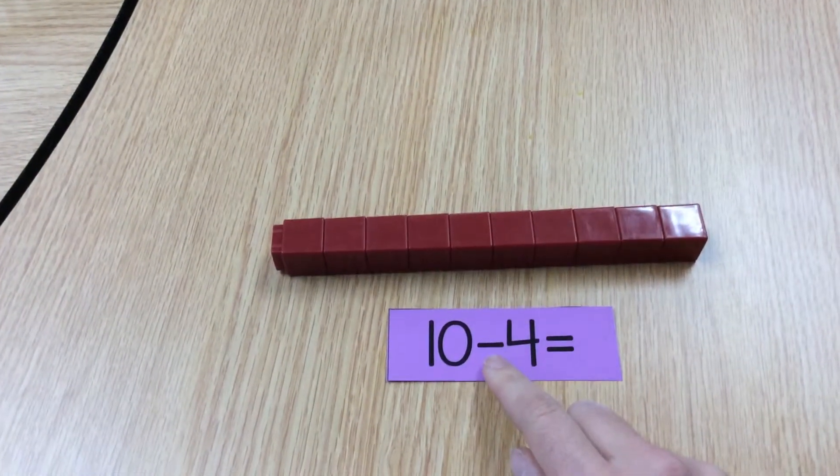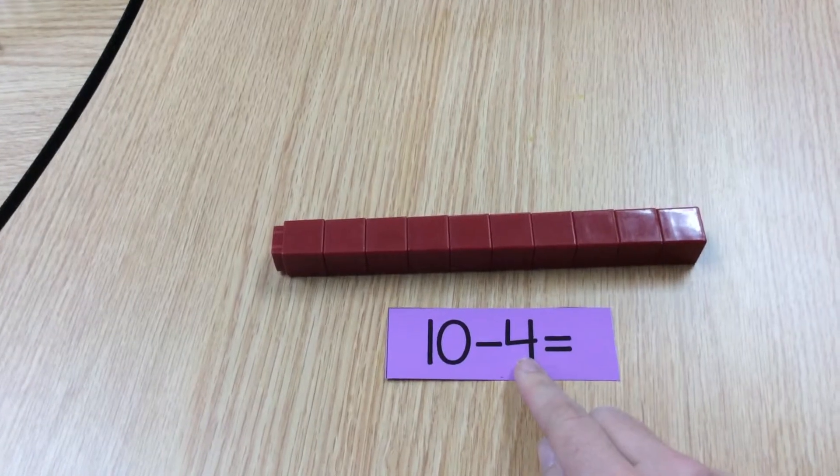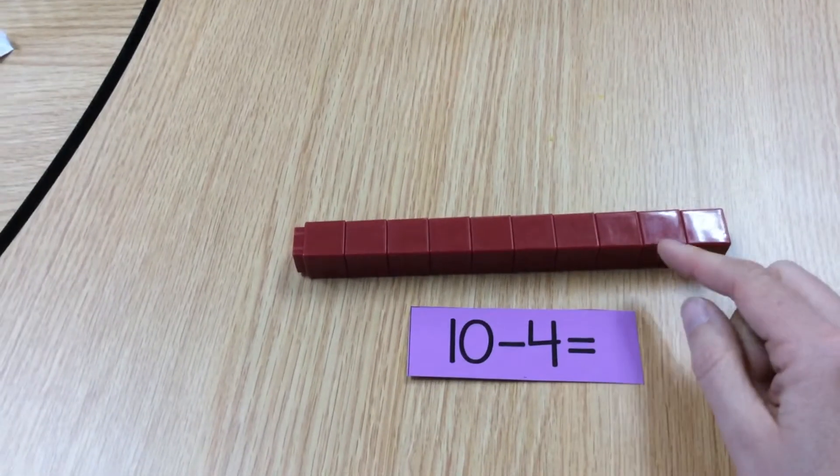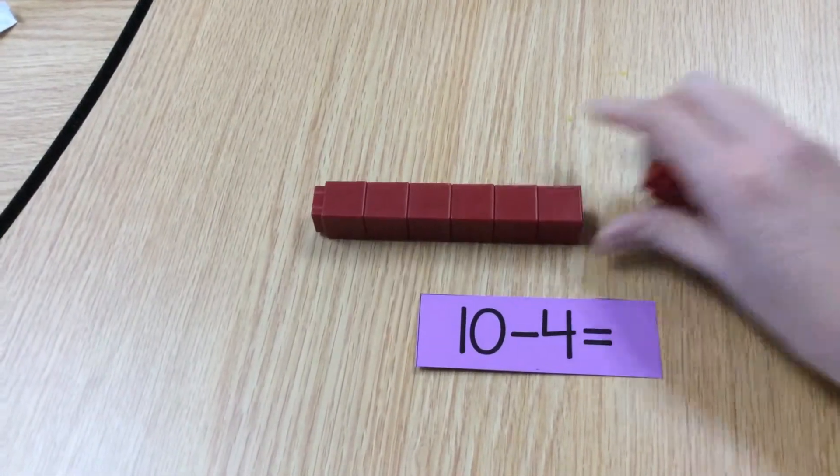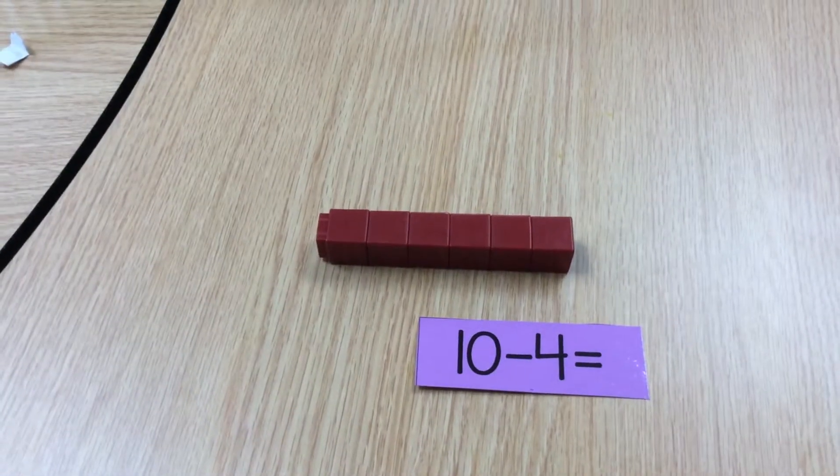I'm going to take away 4. So what I want to do is count 1, 2, 3, 4 and remove them from my cube train.